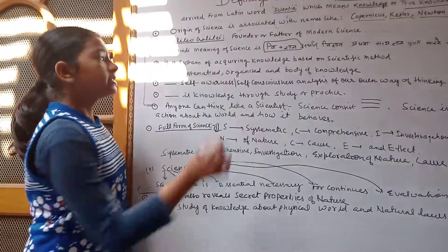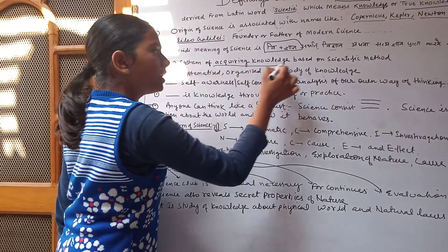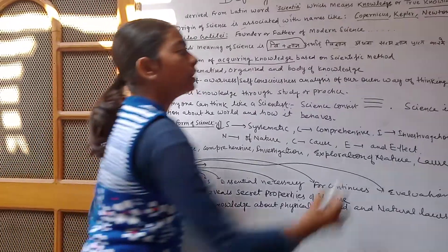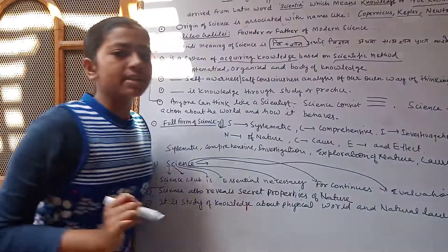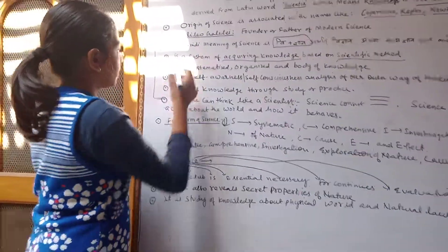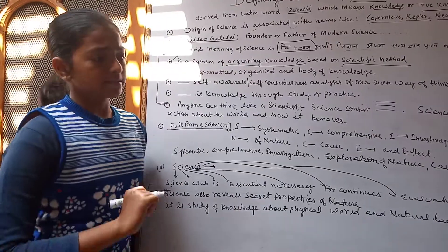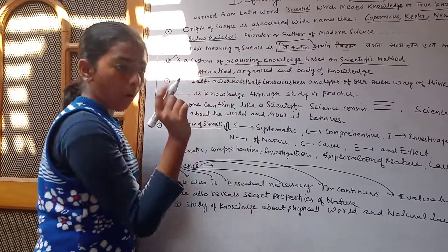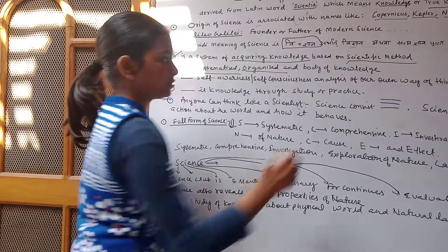Science is a system of current knowledge based on the scientific method. Science is a systematized, organized body of knowledge.